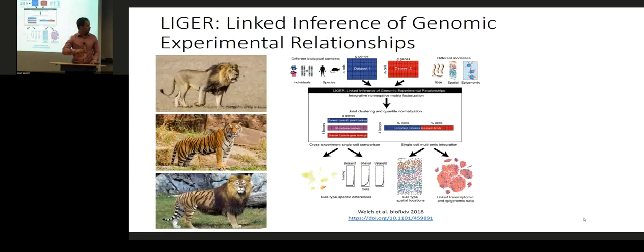We developed LIGER, which uses integrative non-negative matrix factorization. We investigated several different ways of performing data integration: across individuals to identify human subject variation, across species to integrate mouse and human cells, and across different modalities including gene expression, spatial transcriptomic data, and single-cell genomic data. LIGER outputs a set of metagene factors, which allow us to identify both the similarities and differences in cells across datasets and also perform multiomic integration. Now I'm going to walk you through how I developed this approach, the decisions I made, and what I learned about non-negative matrix factorization in the process.